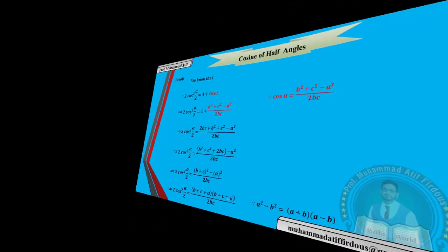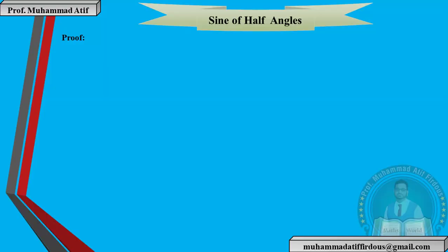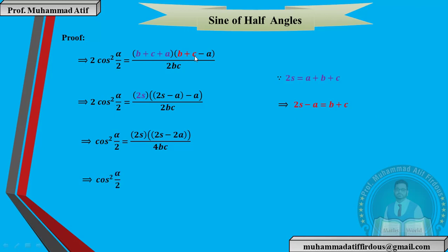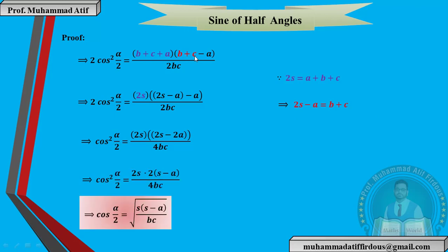جب درمیان میں negative آئے تو ایک دفعہ add کریں گے اور ایک دفعہ subtract کریں گے۔ ان کی values 2s = a + b + c سے نکال لیں گے۔ b + c کی value بھی نکال لی ہے۔ numerator میں 2, 2, 4 common آ رہا ہے — four denominator سے cancel ہوگا۔ Same pattern پے یہ formulas بھی proof ہو رہے ہیں۔